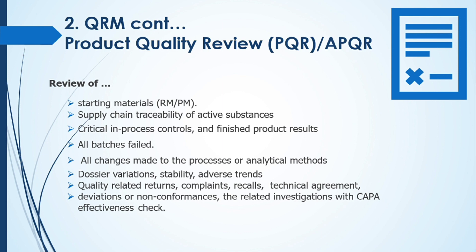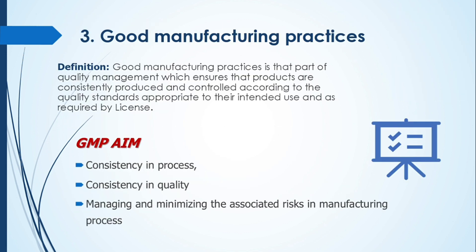Even if a product was not manufactured for one year, you still have to prepare the product quality review document. In this PQR document, you must consider dossier variations, technical agreements, quality trends related to returns, recalls, complaints, deviations, change controls, and related CAPA investigation records.